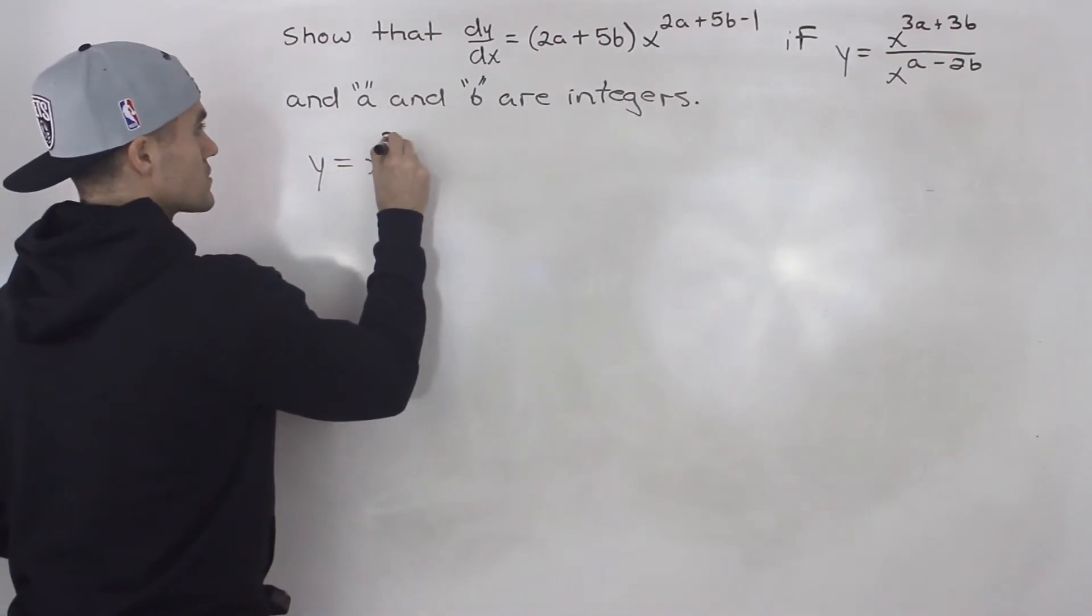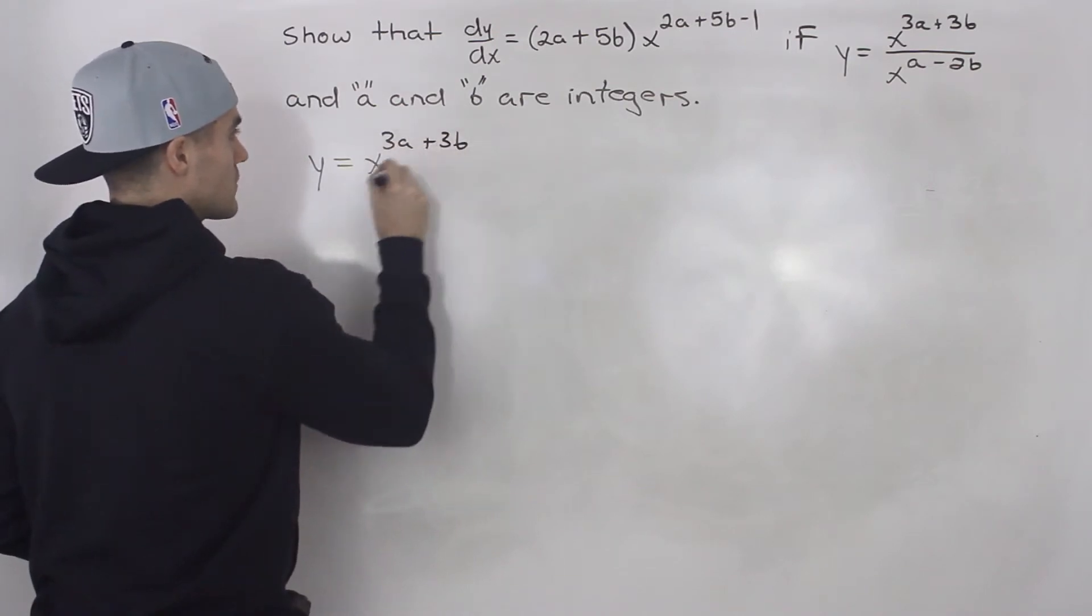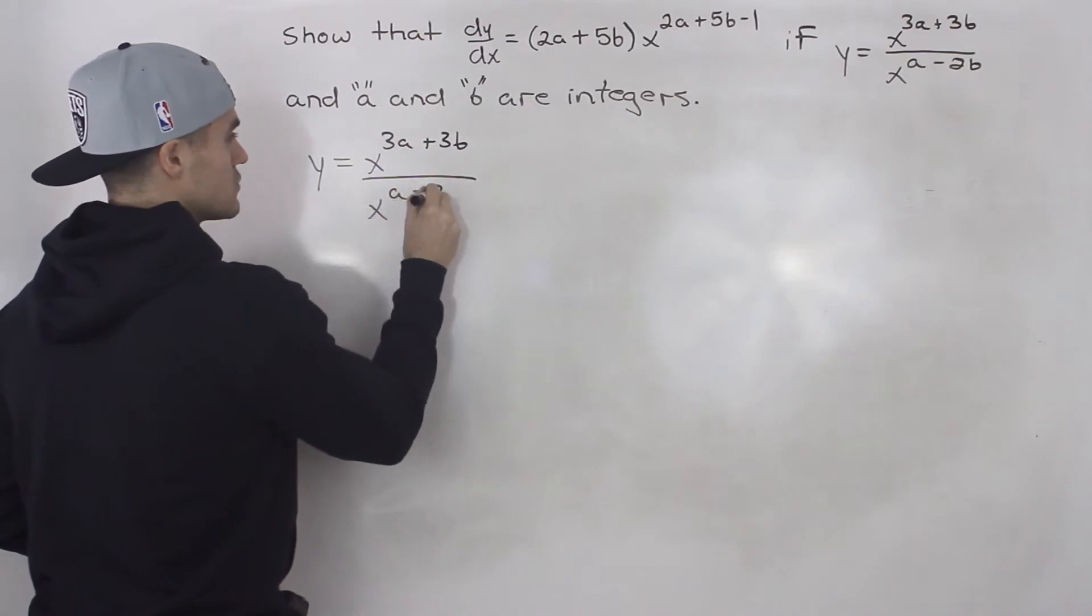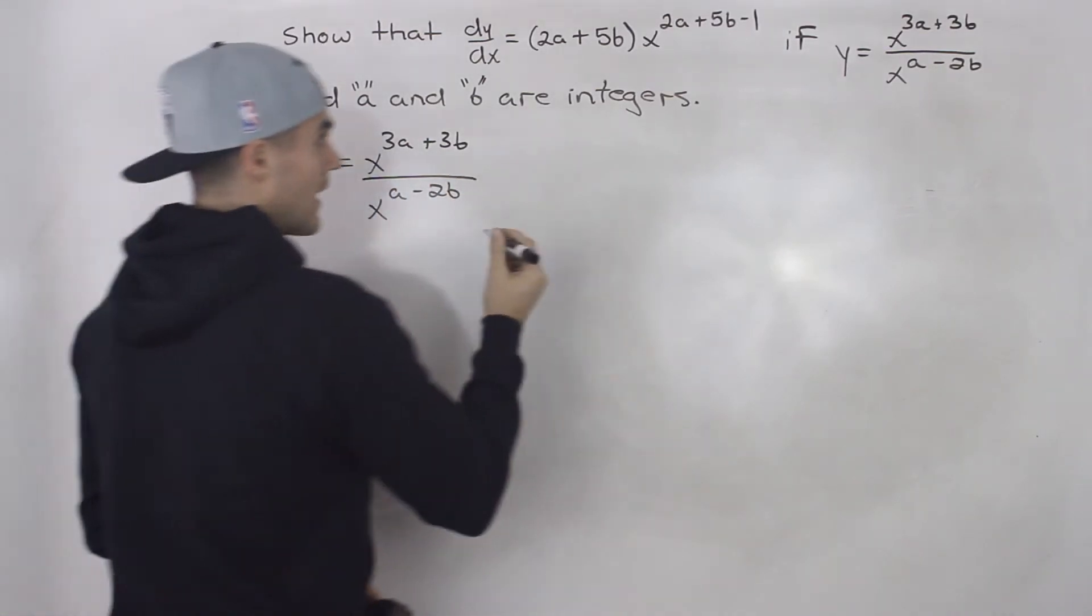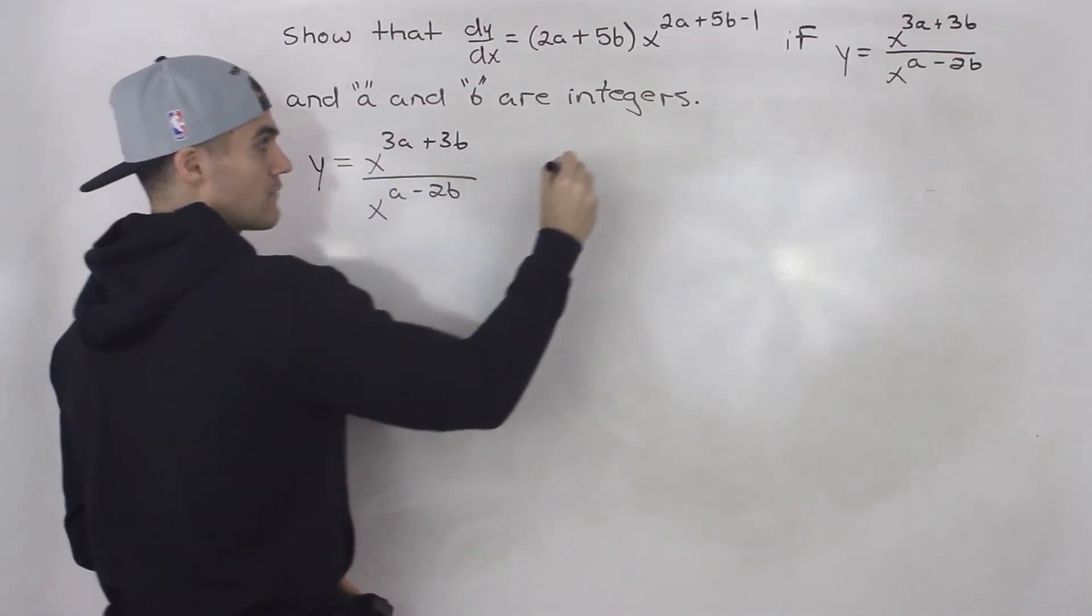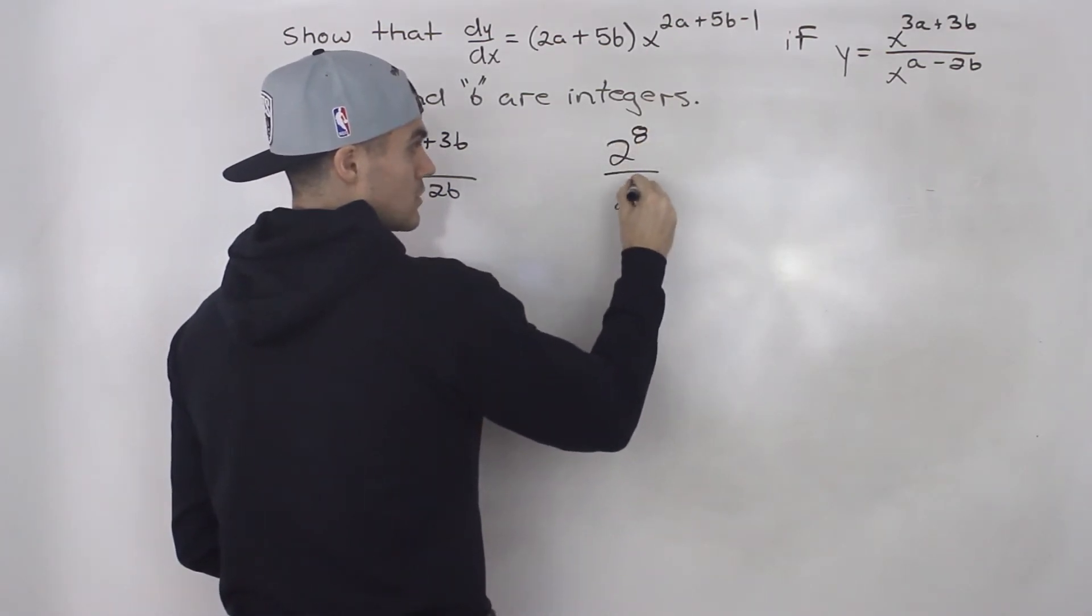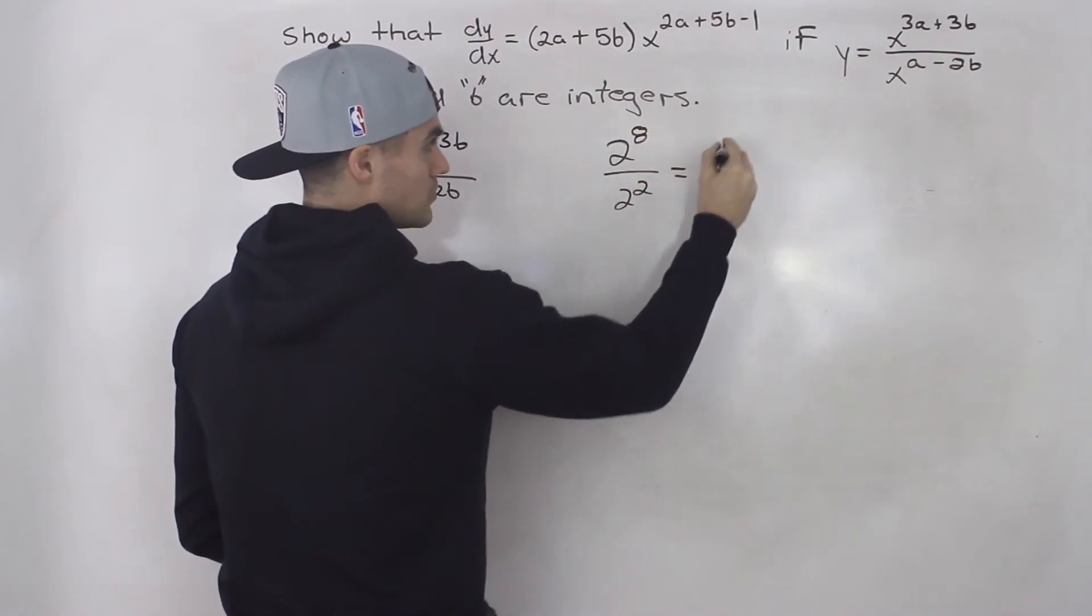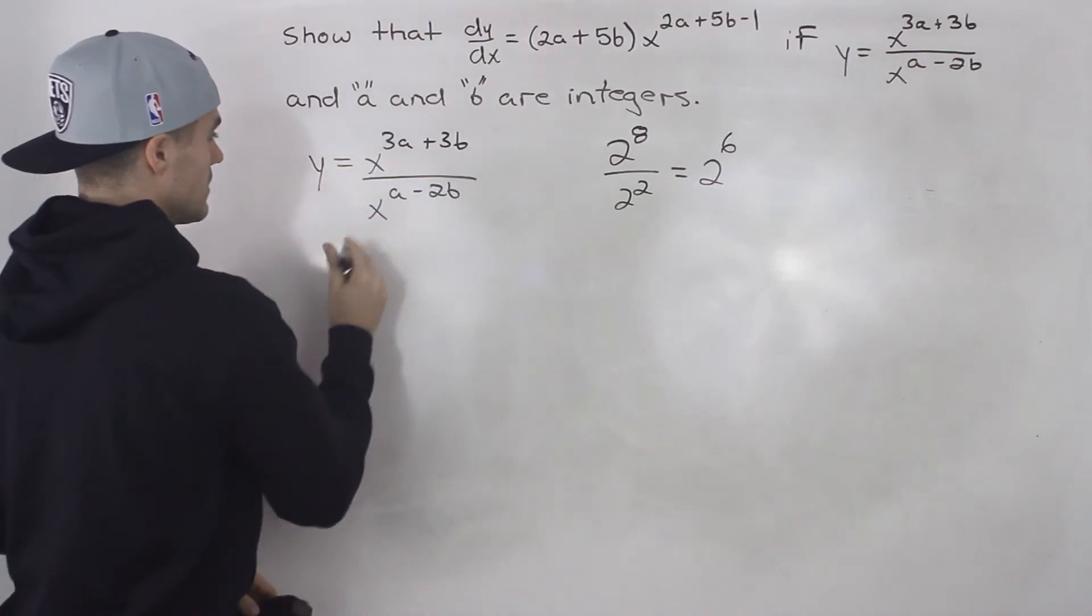Here's what I mean by that: x^(3a + 3b) over x^(a - 2b). We know in general that if we have two exponents that we are dividing and they have the same base, for example 2^8 divided by 2^2, well we just subtract the exponents. That would be 2^6. Same thing here.